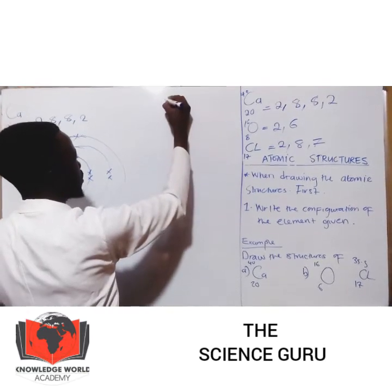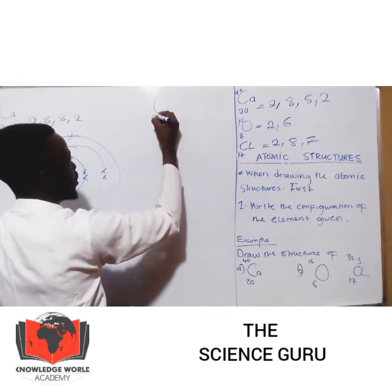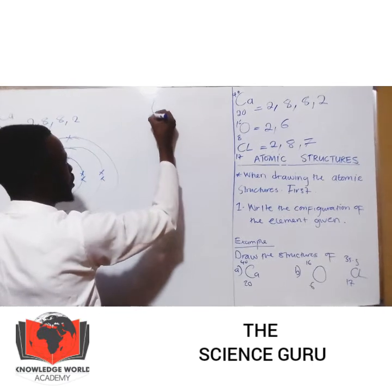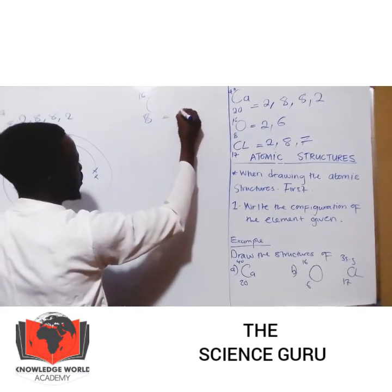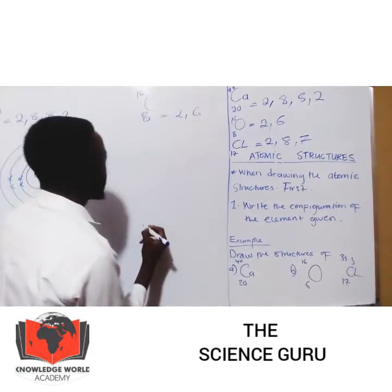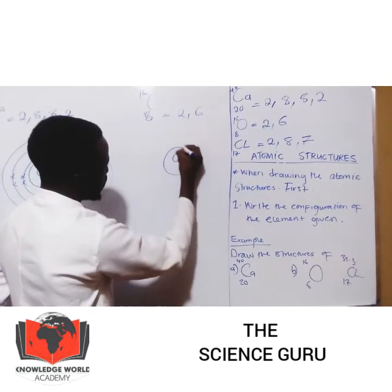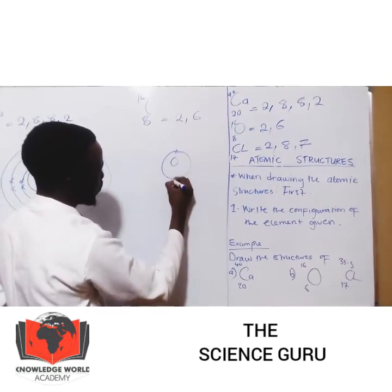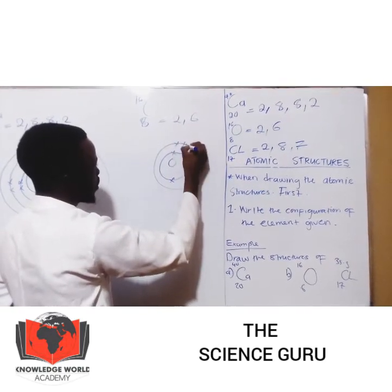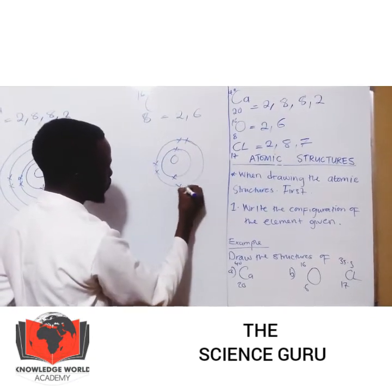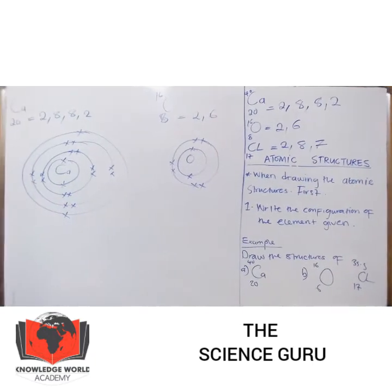We come to oxygen. This is oxygen — this is 8, and this is 16. So we know that the configuration is 2, 6. First shell is 2, second shell is 6. Just like that. Don't add any information.